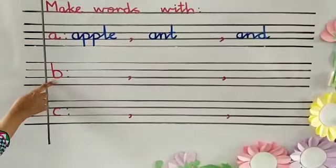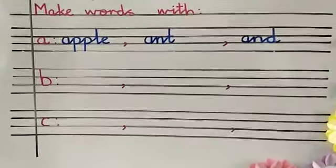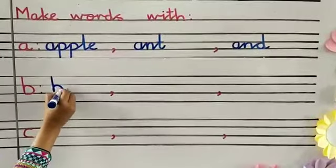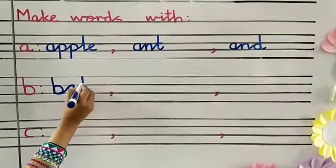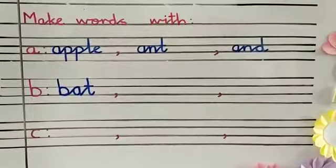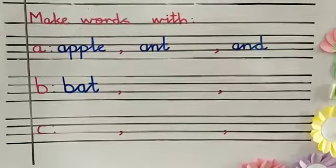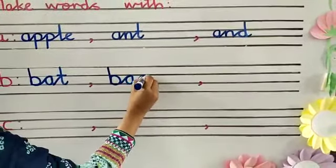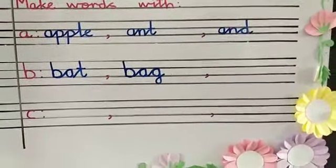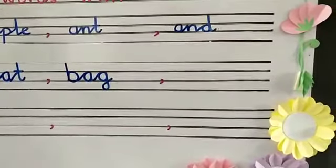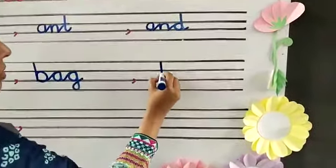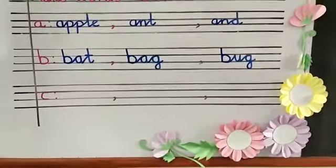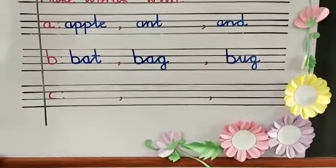Tell me what begins with B. Bat — B, A, T — bat. Now another word: bag — B, A, G — bag. Any other word? Bug — B, U, G — bug. Or you can write any other word: ball, banana, whatever you want to write. But write down only three words.